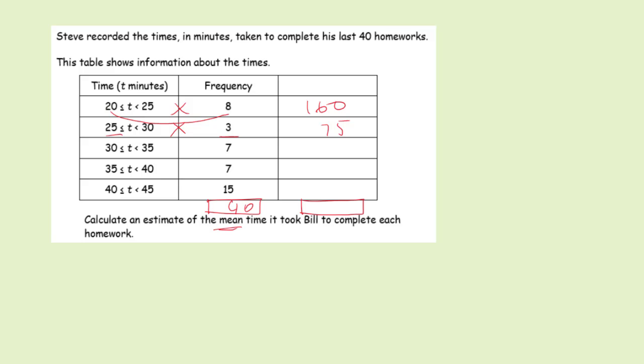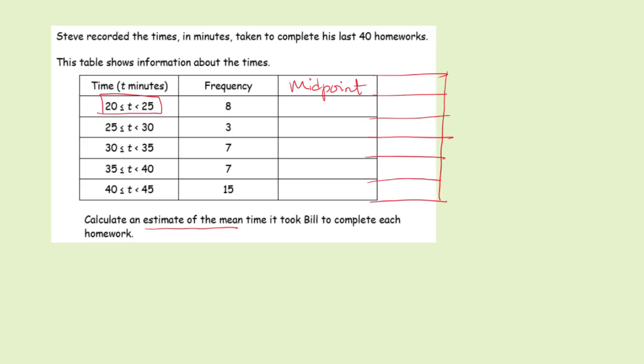The next mistake students will possibly make is they will recognize it's an estimate the mean question and they will recognize the data is grouped so they need to find the midpoint. They will draw another column on the far right and label it midpoint. They will know they need to work out the midpoint and then multiply the midpoint by the frequency because the data is grouped.